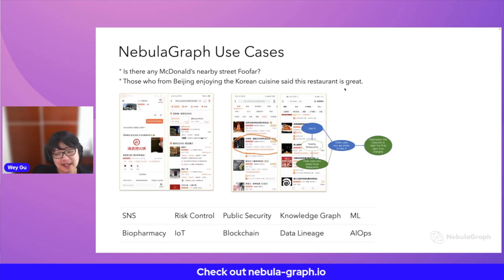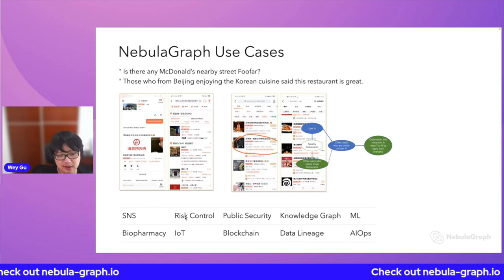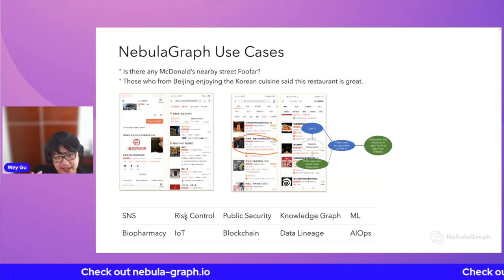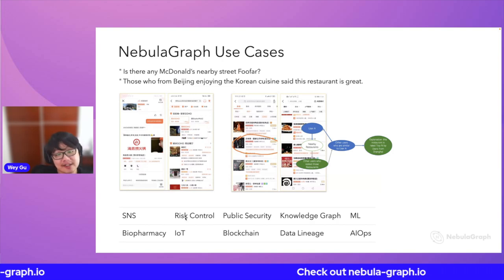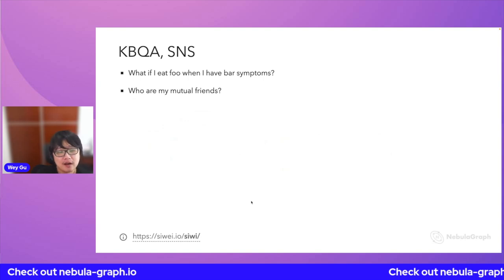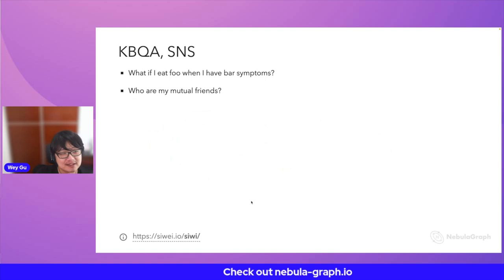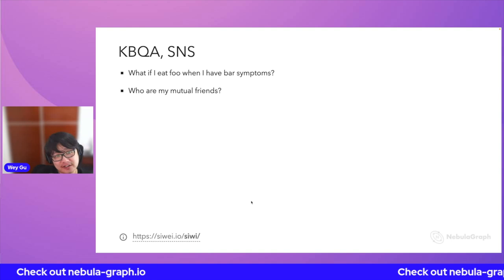Graph is actually leveraged in many different cases — for example, social network, risk control, et cetera. I'll give some more details. Some of them are actually toy projects I created for learning purposes. The first one is the knowledge-based QA system, just like the Meituan/Yelp one. For example, if you're in a hospital app, you want to know what food is good for your health when you have some conditions.